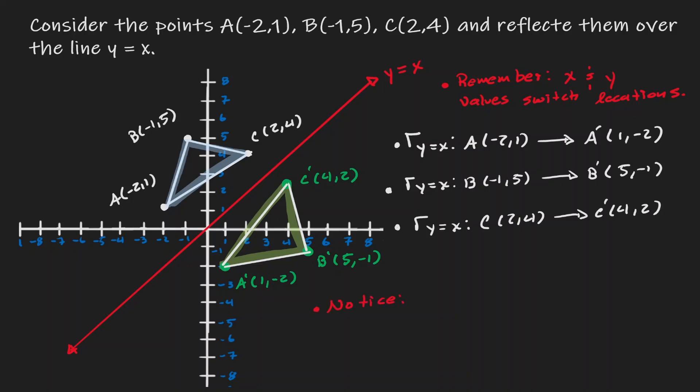Notice that all we have done is shift the location of every single point in the triangle, and because of that the pre-image is congruent to the image. So we can say that this reflection is an isometry. Generally speaking, regardless of what line it is, every reflection will always be considered an isometry.